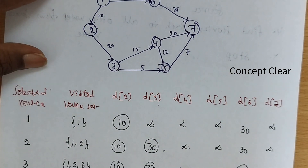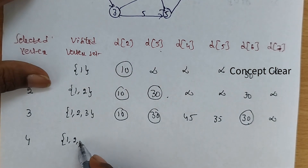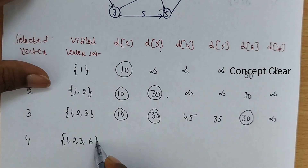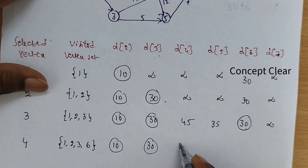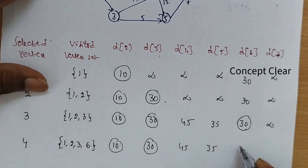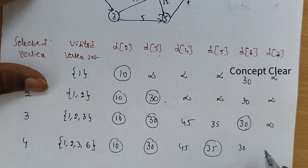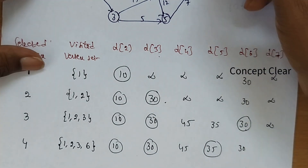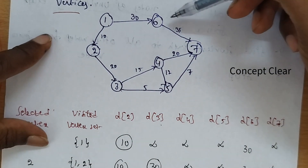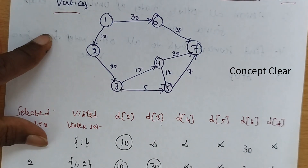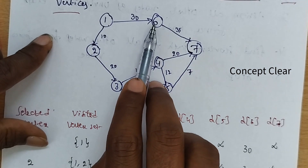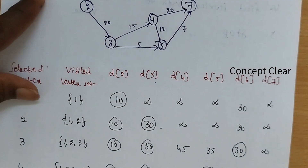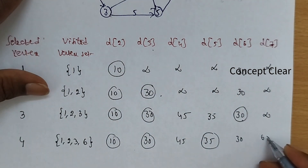Visited are now 1, 2, 3, 6. The current values are: d(2)=10, d(3)=30, d(4)=45, d(5)=35, d(6)=30. From vertex 6 to vertex 7, the cost is 35. So from 1 to 7 via 1→6 is 30 plus 35, giving a value of 65.